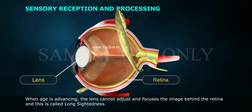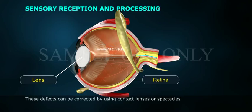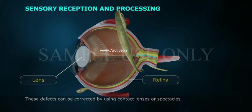As age advances, the lens cannot adjust and focuses the image behind the retina; this is called long-sightedness. Both these defects can be corrected by using contact lenses or spectacles.